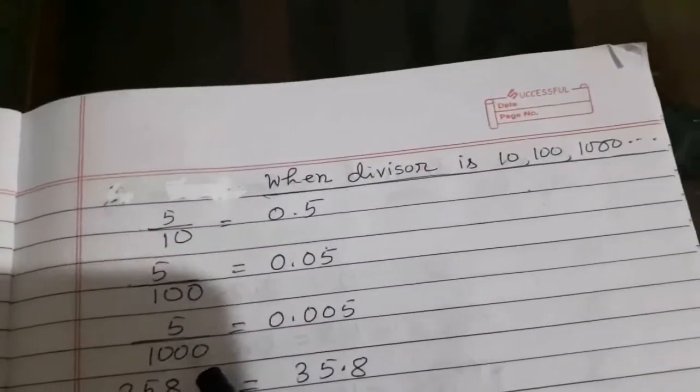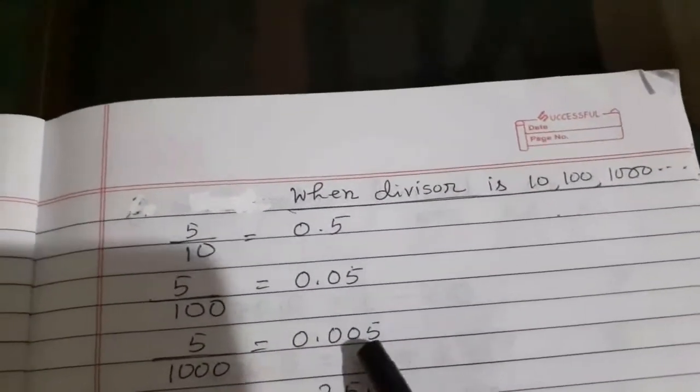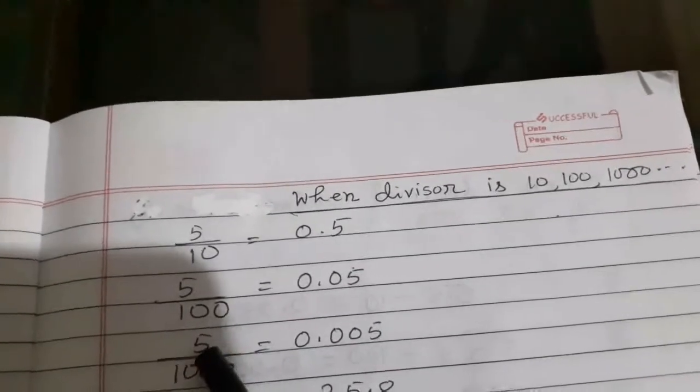Similarly here, 5 by 1000. Three zeros, therefore point before three digits. But here only 5, one digit.